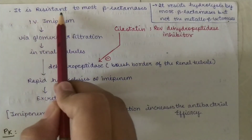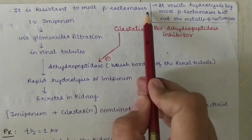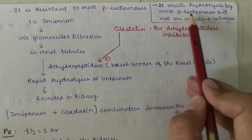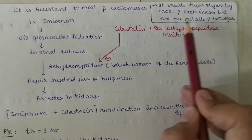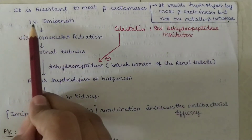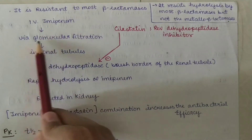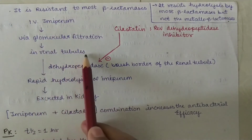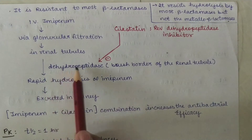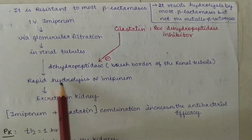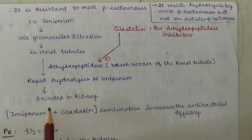Imipenem is resistant to most beta-lactamases — it resists hydrolysis by most beta-lactamases, but not metallo-beta-lactamases. When given IV, Imipenem undergoes glomerular filtration and in the renal tubules is rapidly hydrolyzed by the enzyme dihydropeptidase and excreted by the kidney.